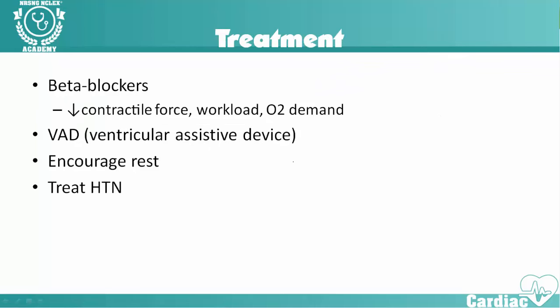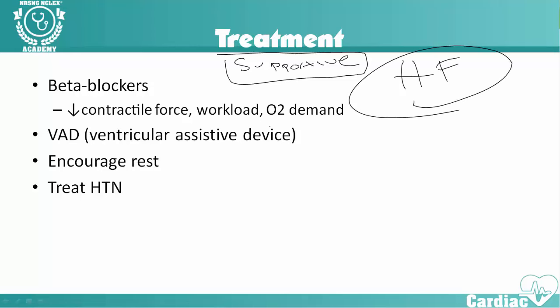Most of the treatment with cardiomyopathy is going to be more supportive. When we say supportive treatment, what that means is we're not going to fix it or cure it — all we're going to be able to do is try to help the patient be a little bit more comfortable. One of the things we can give is beta blockers — beta adrenergic blockers — and these are going to decrease the contractile force, the workload, and the oxygen demand. As we do those three things, our heart is able to relax a little bit, not require as much oxygen, and not have to squeeze as much, which will lead to decreased O2 demand. It's supportive in cardiomyopathy — it's not going to cure it at all.